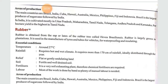Brazil is the largest producer of sugar cane, followed by India. If it is asked which country is the largest producer of sugar cane, the answer is Brazil. India stands at second position.